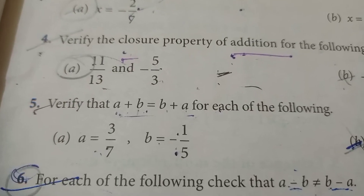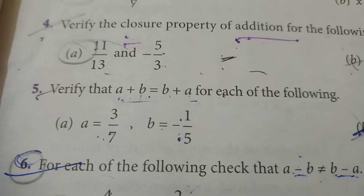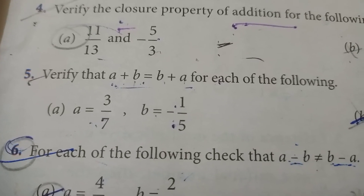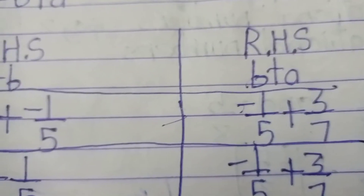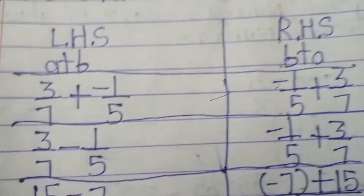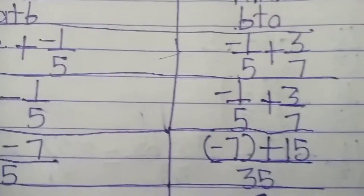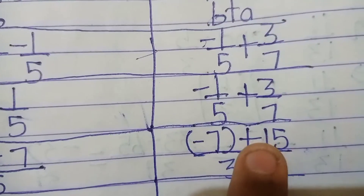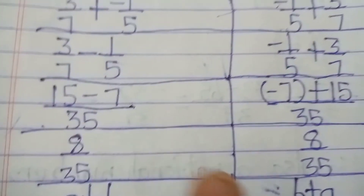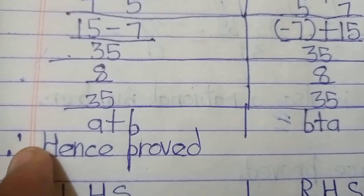Fifth question: verify that a + b = b + a for each of the following. Part (a): a = 3/7, b = -1/5. LHS = 3/7 + (-1/5) = (15 - 7)/35 = 8/35. RHS = -1/5 + 3/7 = (-7 + 15)/35 = 8/35. So a + b = b + a. Hence proved.